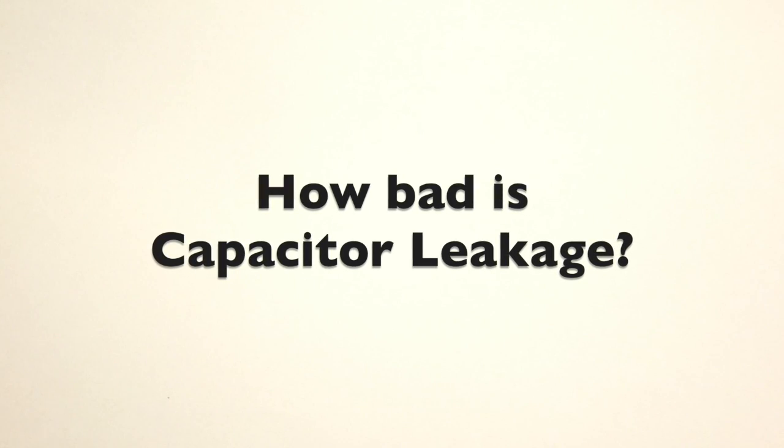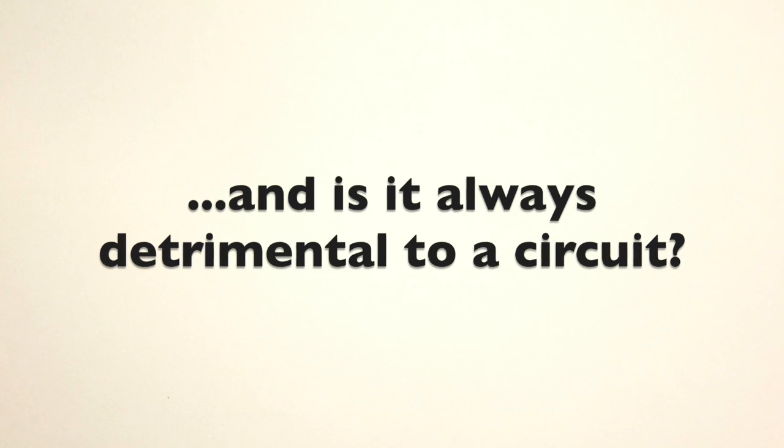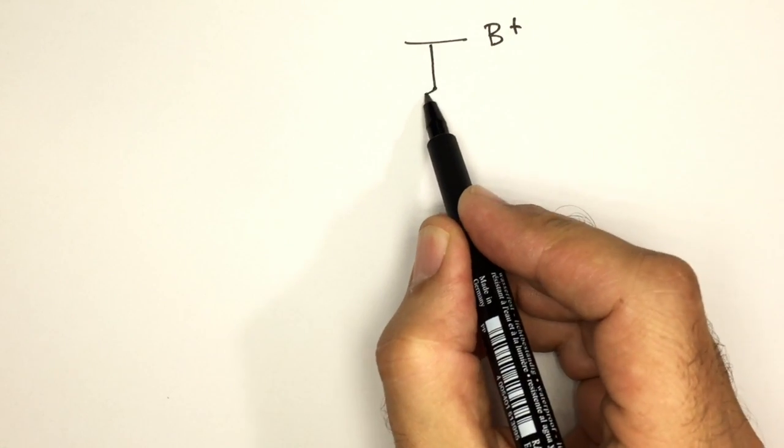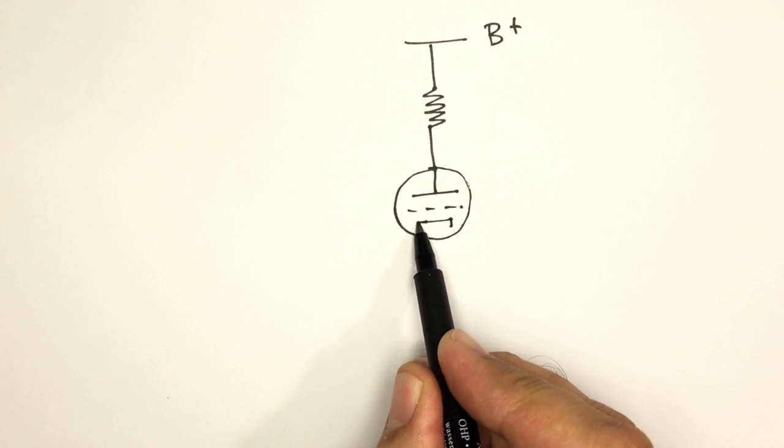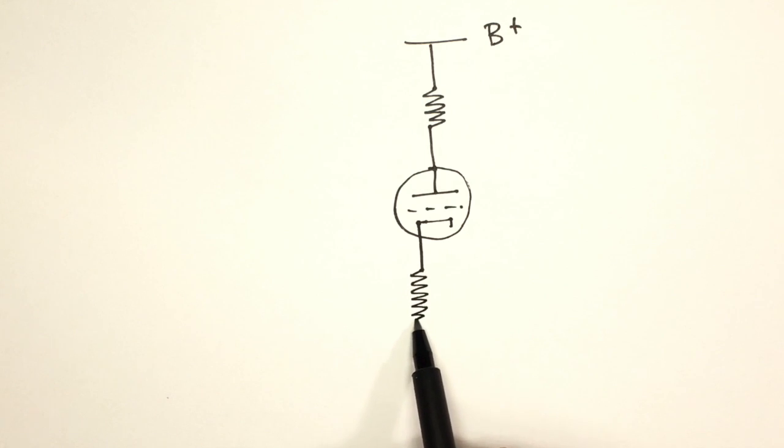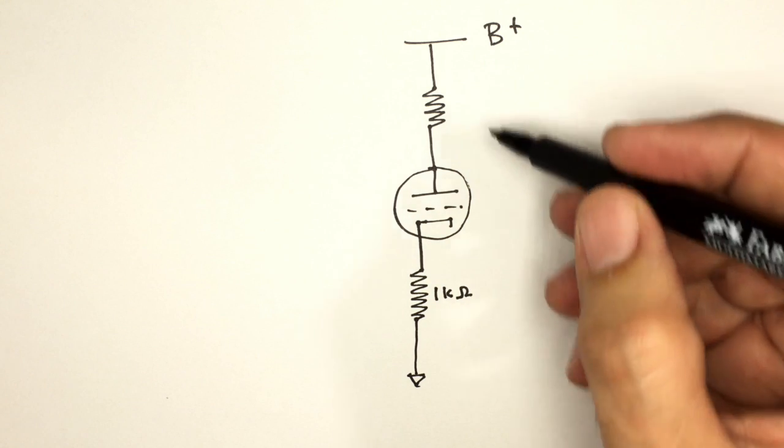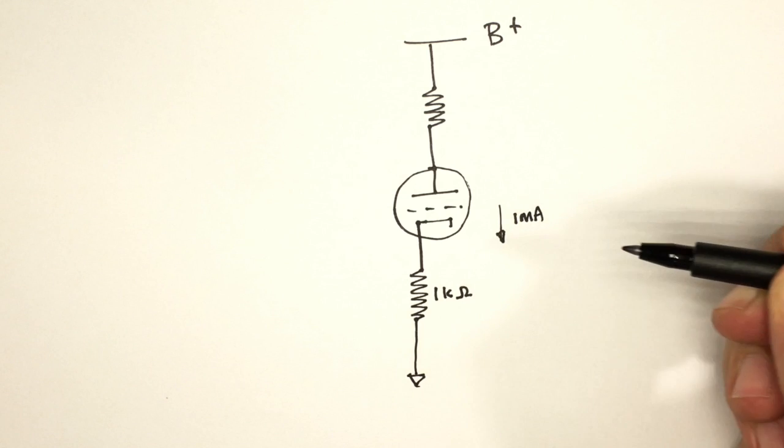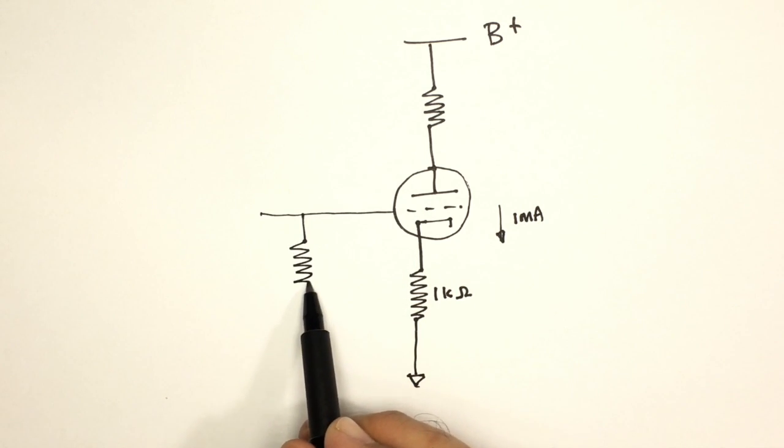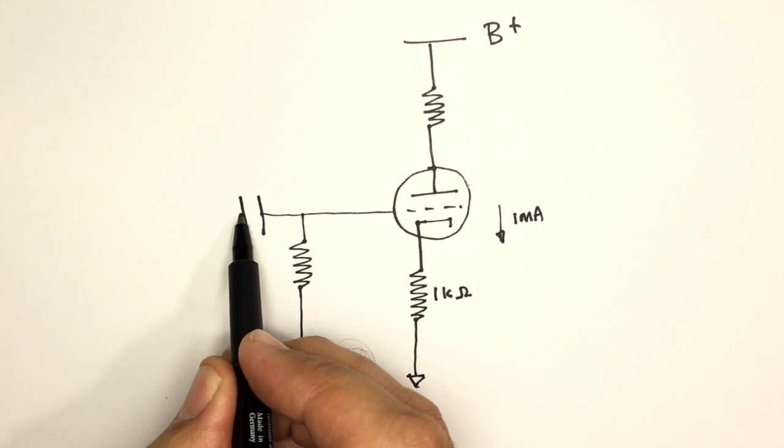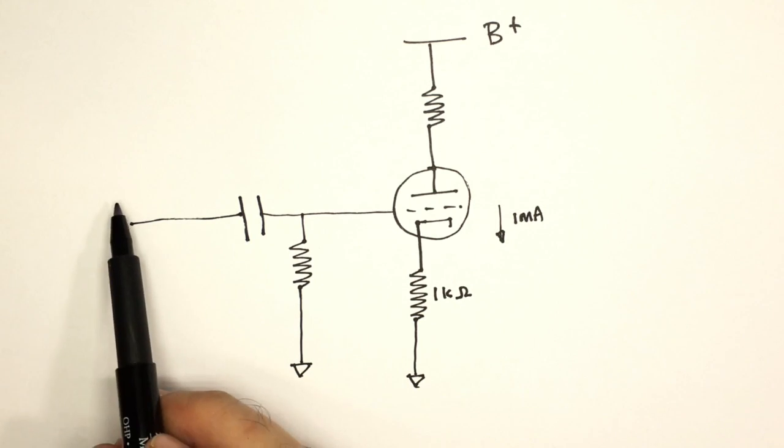The detrimental effects of leaky capacitors are very easy to observe. I'll give you a quick demonstration of exactly what happens when a capacitor gets leaky. Let's have a look at a typical triode stage. You'll have an anode resistor there, there's your anode or plate, there's our grid, there's our cathode. Let's assume this one is cathode biased with a 1k resistor to ground. Let's also assume that we bias it to achieve 1 milliamp of current through the tube.